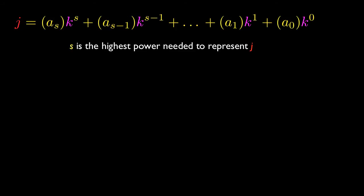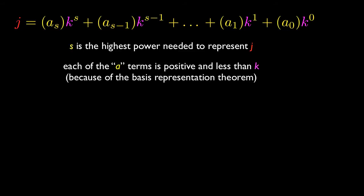So first of all, s is the highest power we need to represent j. Of course any number could be represented as the sum of every single power of k, but most of them are going to be multiplied by 0. So s is the highest power you need to get high enough so that we could represent j. So we have all these A terms, A sub s, A sub s minus 1, A sub 1,